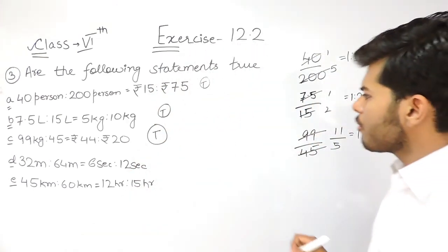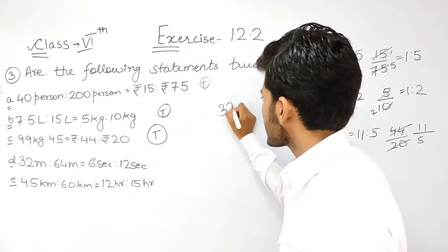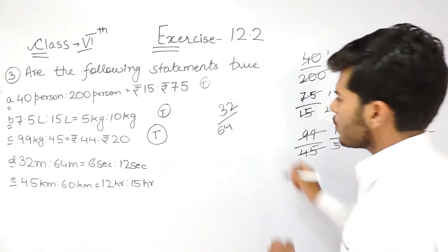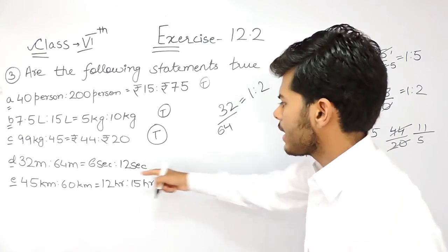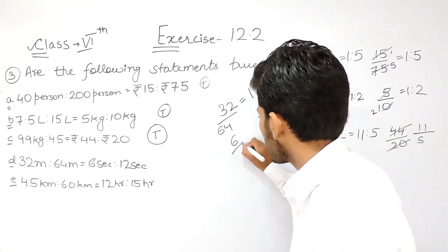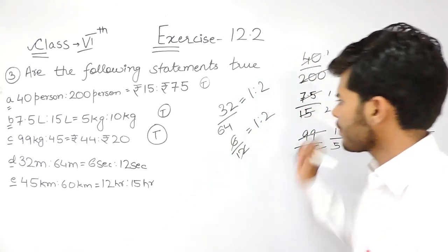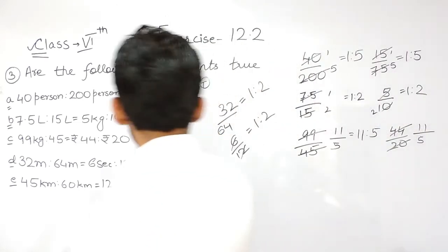Now statement number 4, that is 32 divided by 64. So the ratio will come out to be 1 ratio 2. That means this statement is also correct.